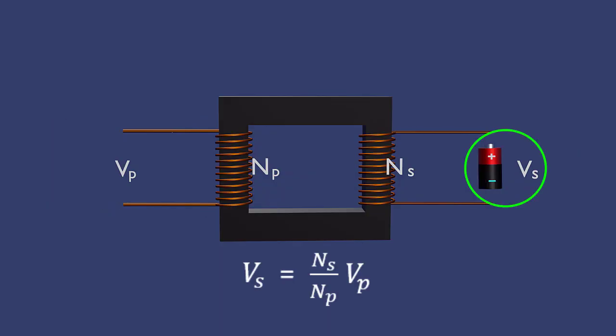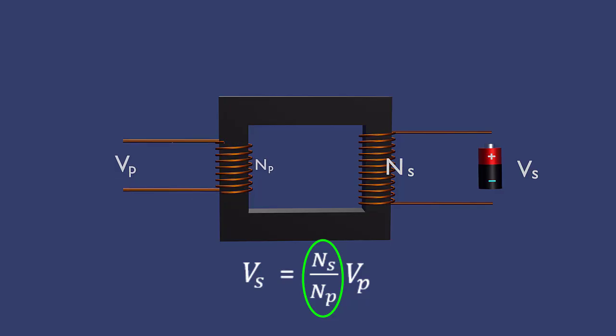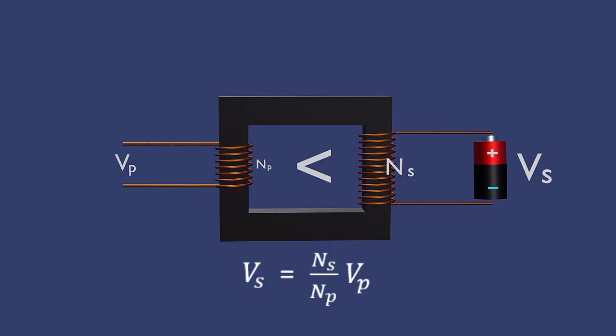The induced voltage in the secondary coil depends on the ratio of number of turns in the primary and the secondary coils. If the secondary coil has more turns than the primary, a higher voltage is induced in the secondary coil. This is called a step-up transformer.